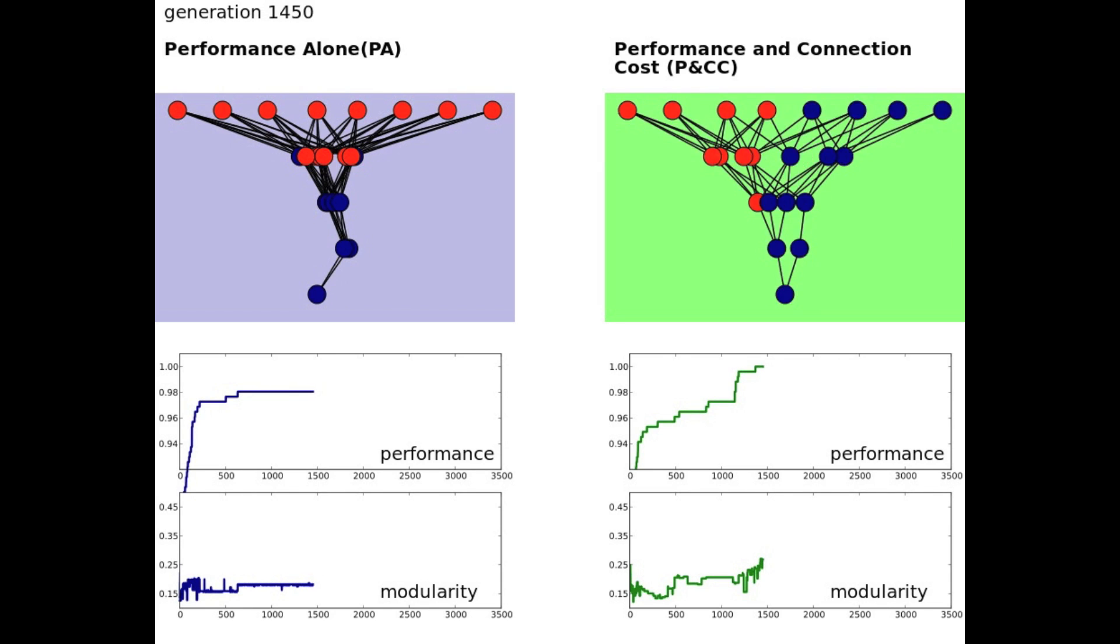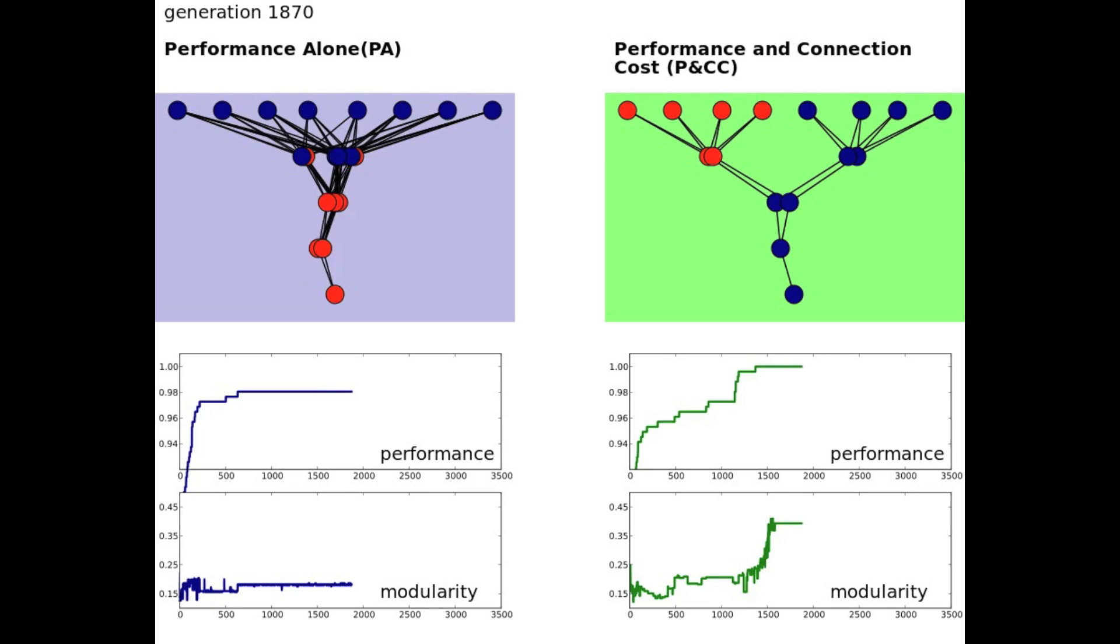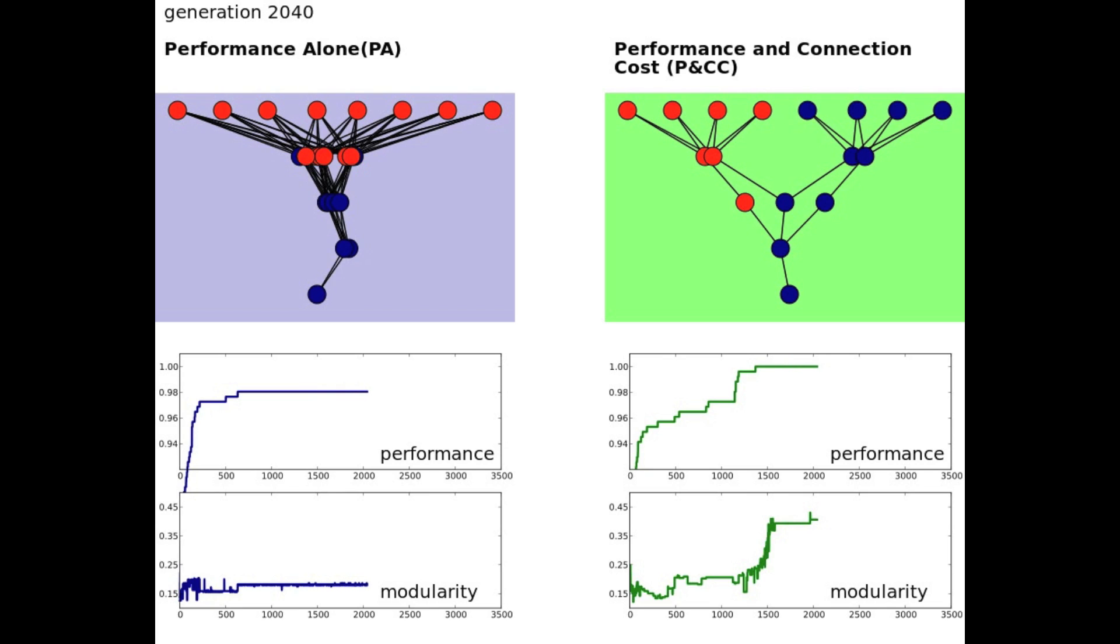What is fascinating is that adding a connection cost actually increases network performance, because modular solutions are better suited to this modular problem.